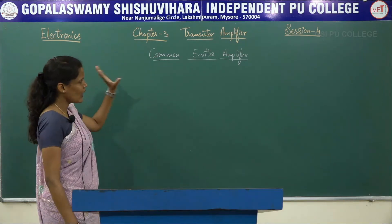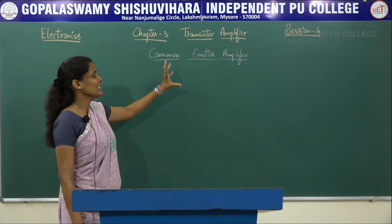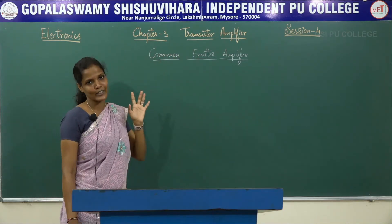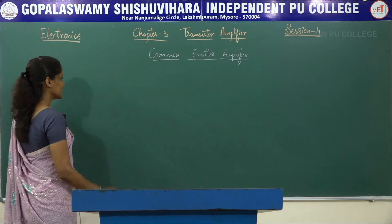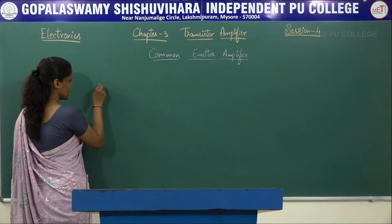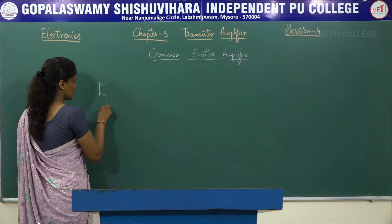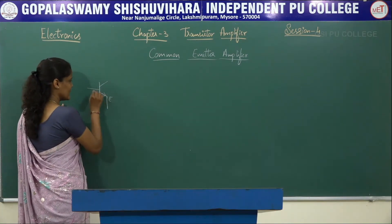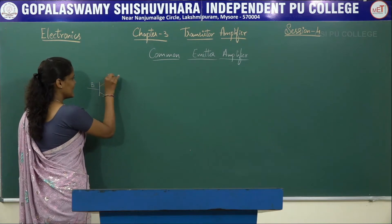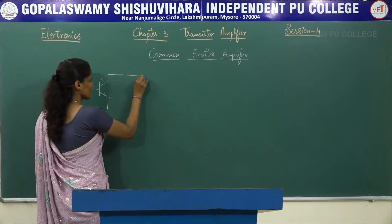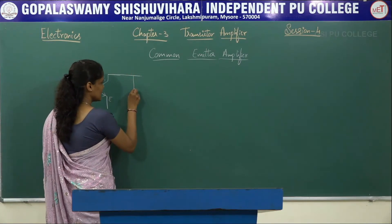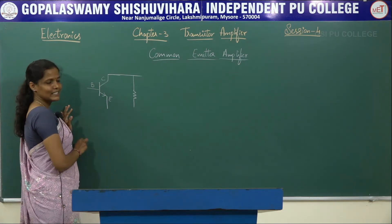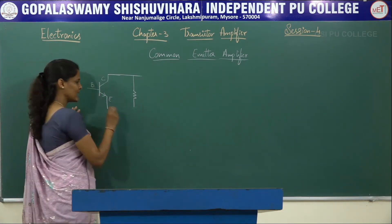The common emitter name comes from the fact that this emitter terminal is common for both the input side as well as the output side of the amplifier circuit — hence, the common emitter amplifier circuit. Now let us try to draw a circuit using an NPN transistor. This is the emitter, base, and this is the collector terminal. As usual, the emitter-to-base junction will be forward biased and the collector-to-base junction will be reverse biased.